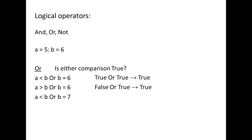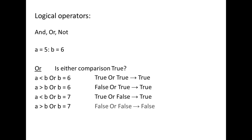A less than b OR b equals 7: is either comparison true? 5 less than 6 OR 6 equals 7 — true or false. Since at least one of the comparisons is true, the entire expression is replaced by true. Finally, a greater than b OR b equals 7: 5 greater than 6 OR 6 equals 7 — false or false. Since none of the comparisons are true, the entire expression is replaced by false.